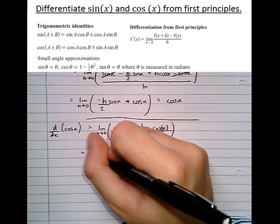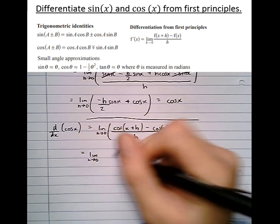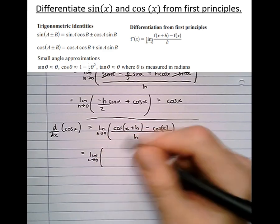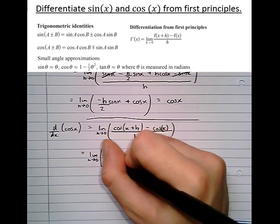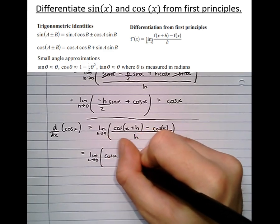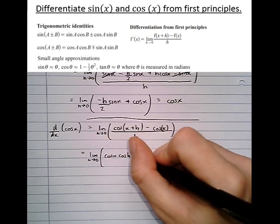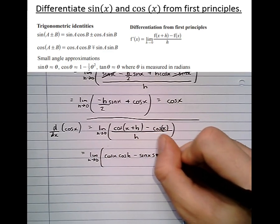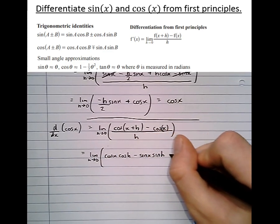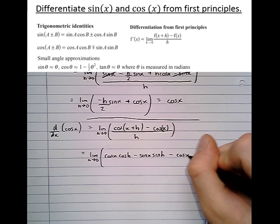Equals the limit as h approaches 0. Now we're going to use the cos formula for expanding this bracket, so that becomes cos x cos h minus sin x sin h, take cos x, all over h.